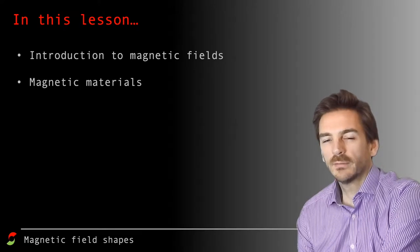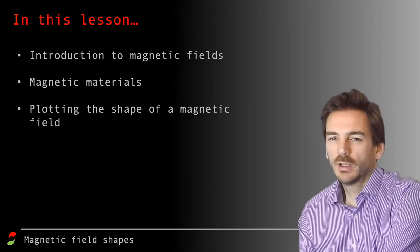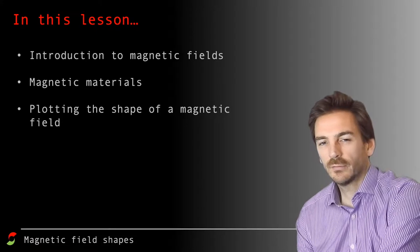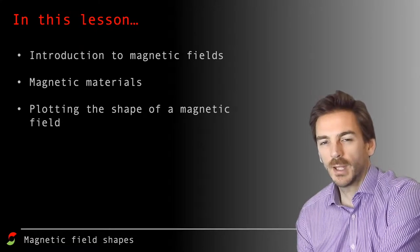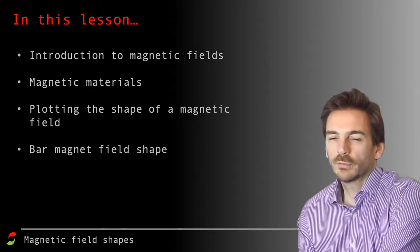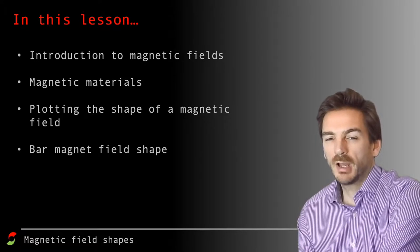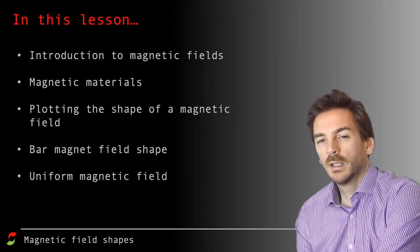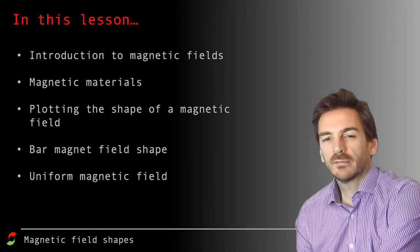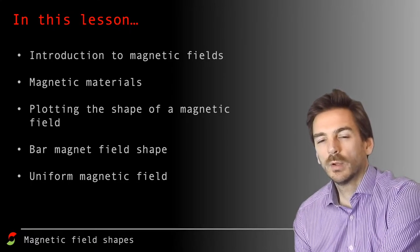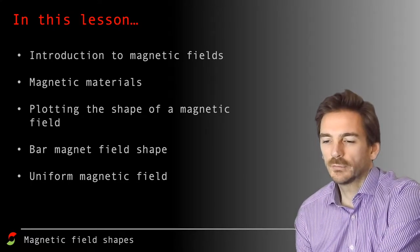looking at different magnetic materials, we're going to be looking at plotting magnetic fields and how to do it using two different methods, and we're going to be looking at what a bar magnet magnetic field looks like and what the uniform magnetic field line looks like and what equipment you need to produce a uniform magnetic field.